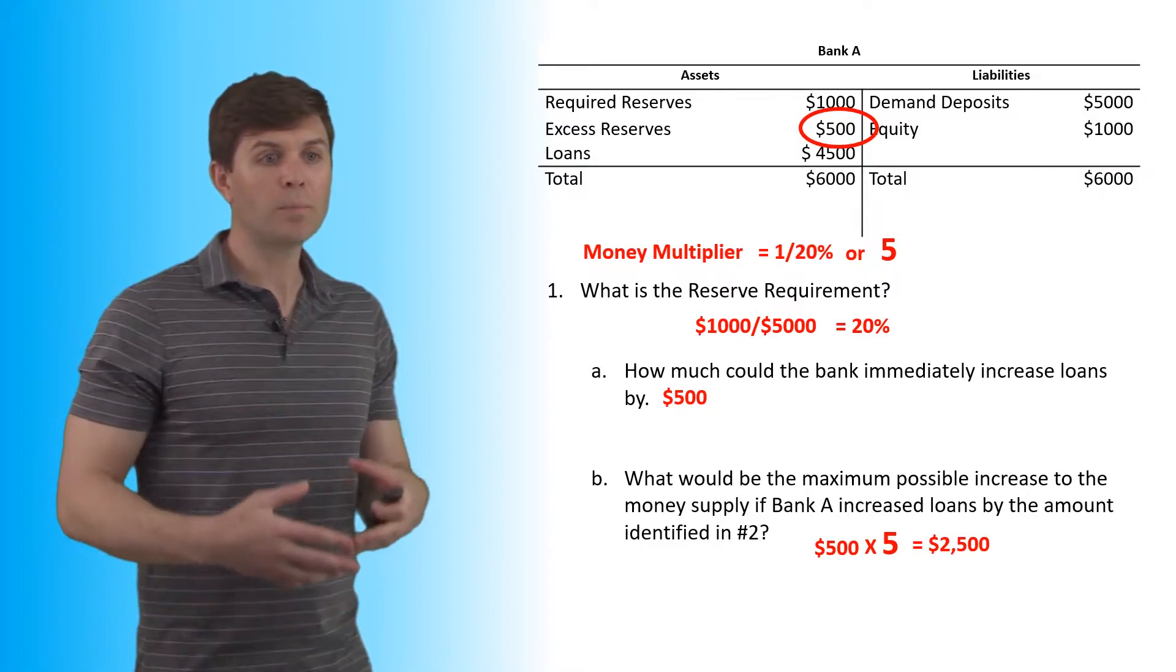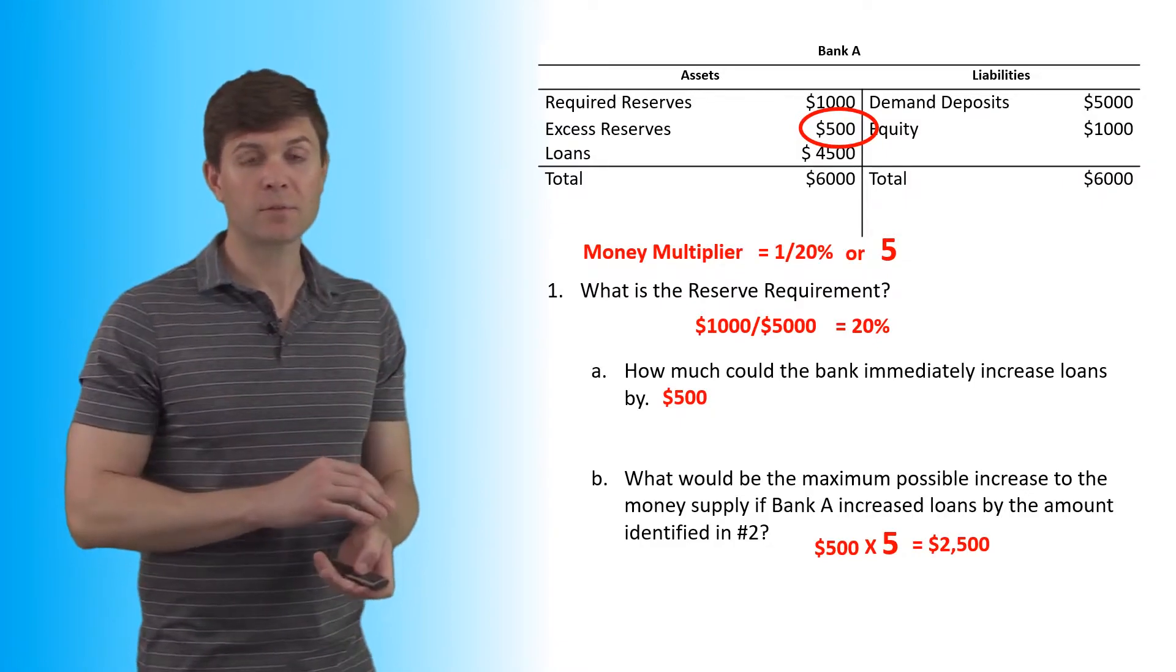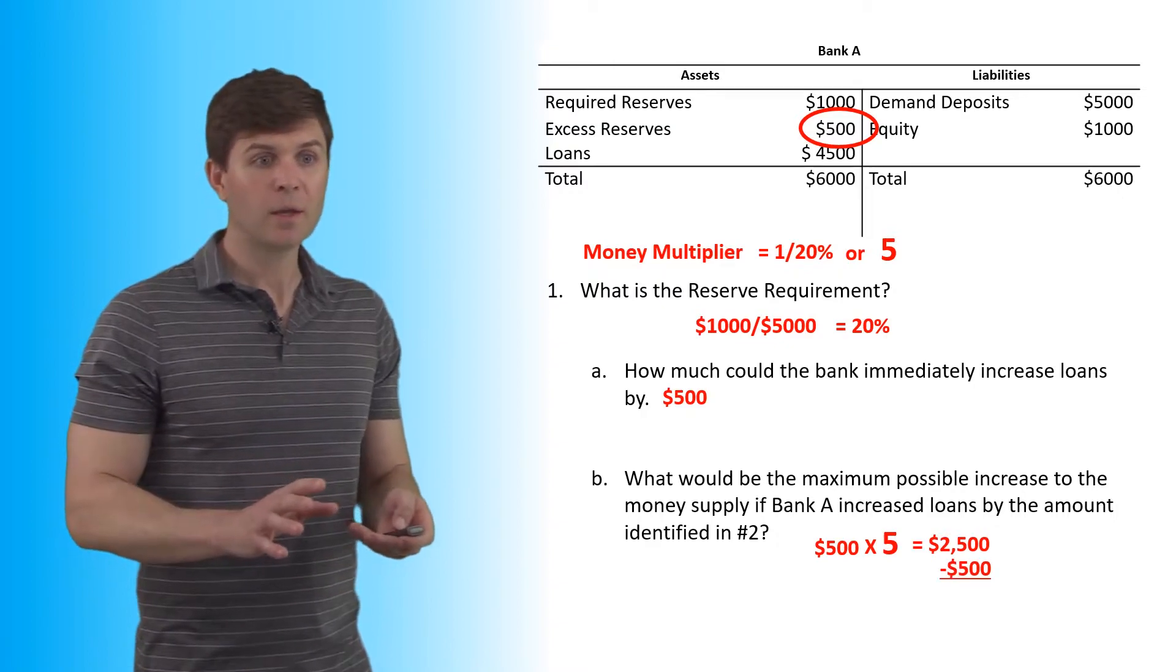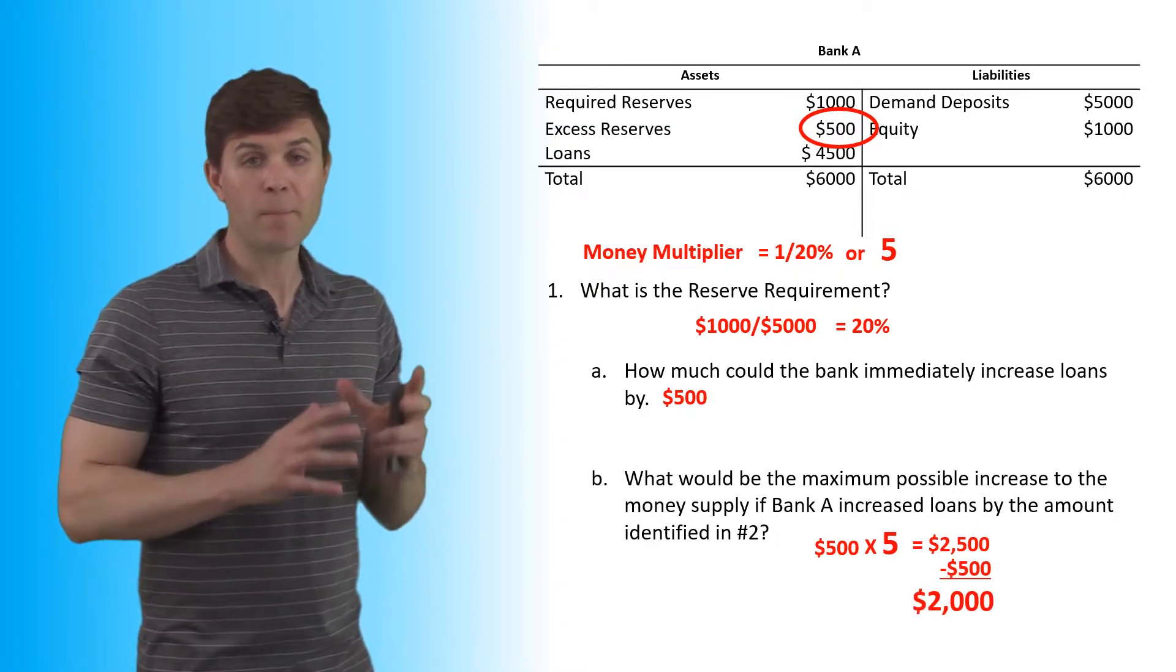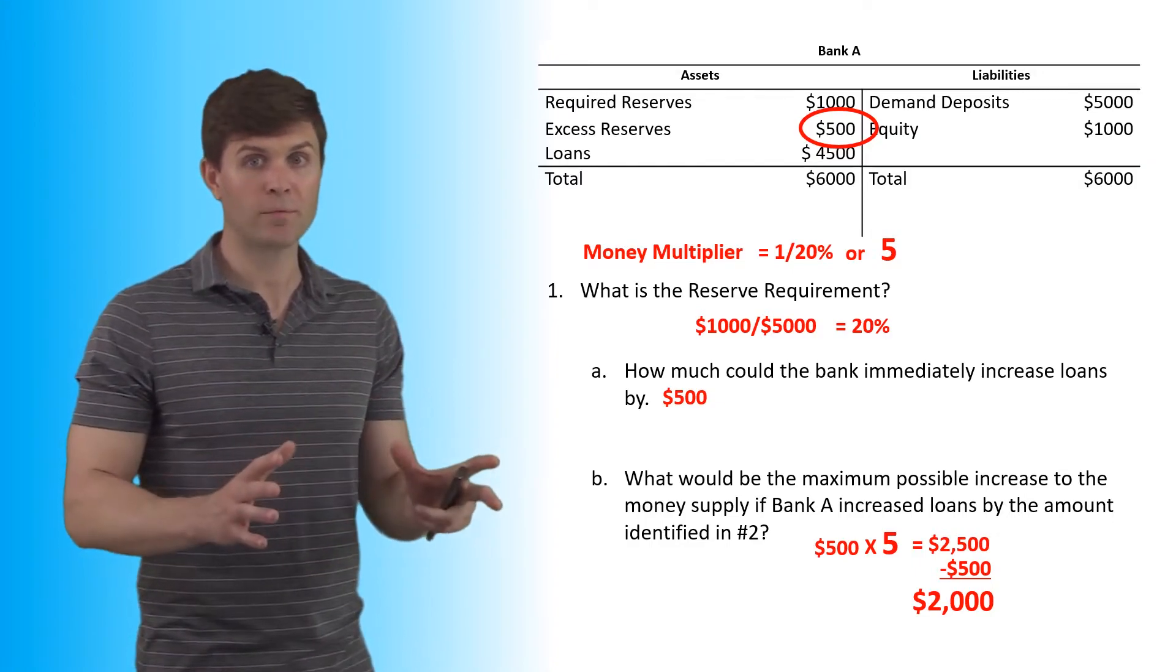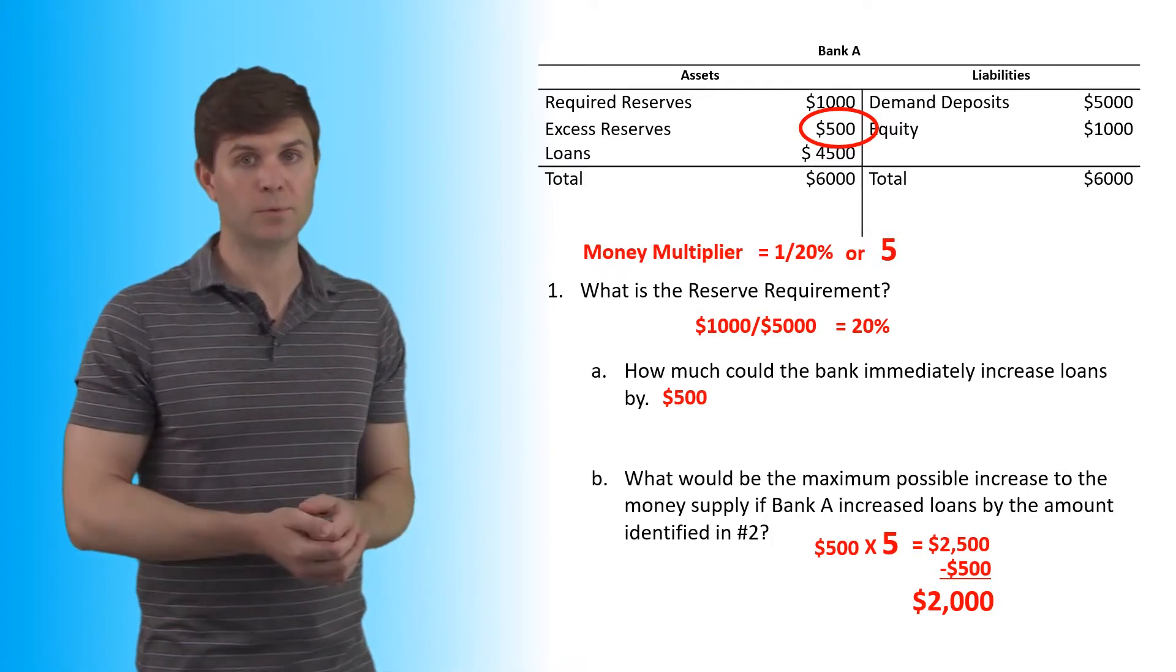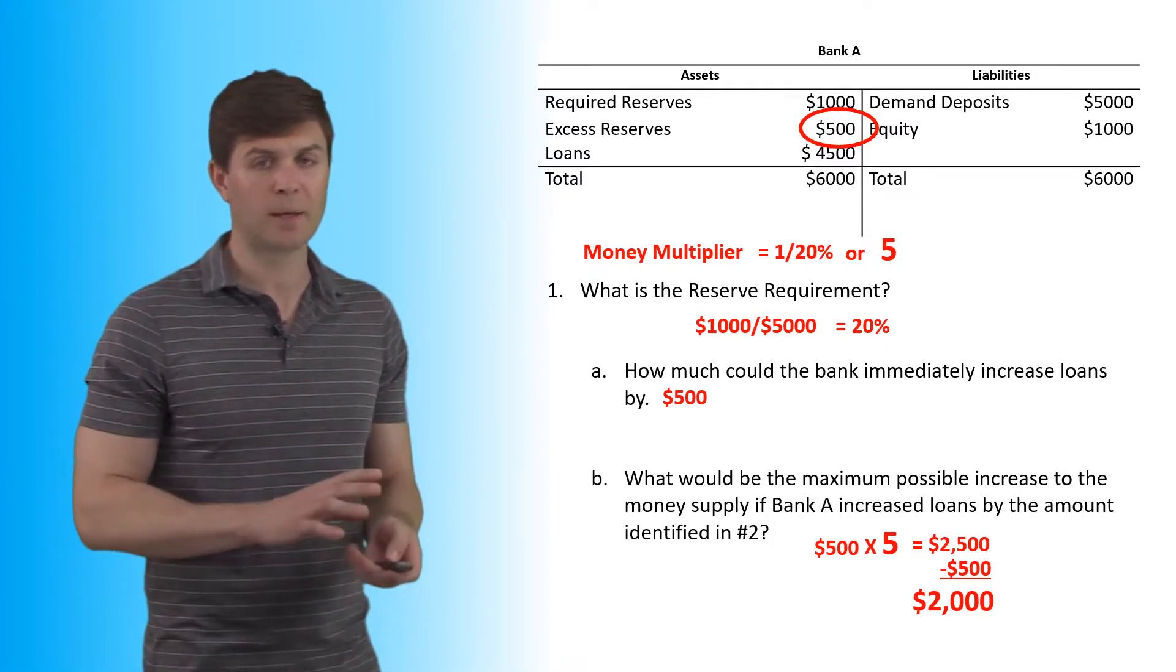But it's asking what would be the maximum possible increase to the money supply? That $500 existed prior to this. So we're going to have to take that out of this total here. The maximum total increase is only $2,000, not the total $2,500. That $500 turns into the $2,500, but it only increases by $2,000. That's where it gets a little bit tricky sometimes with these questions.